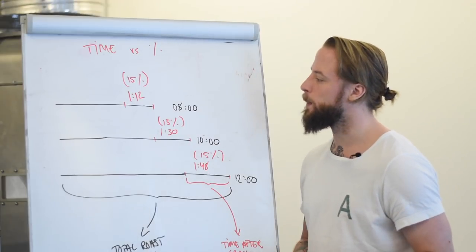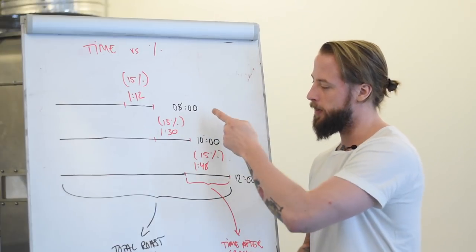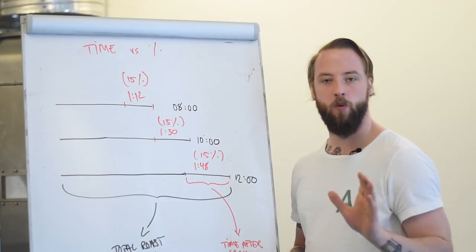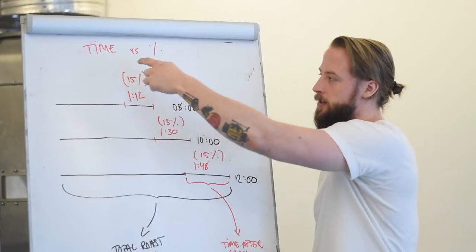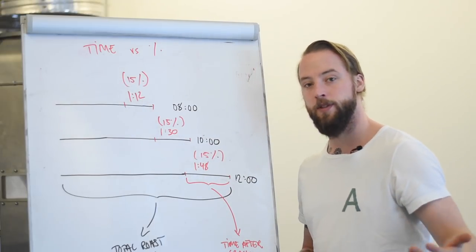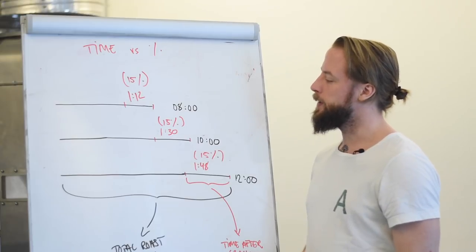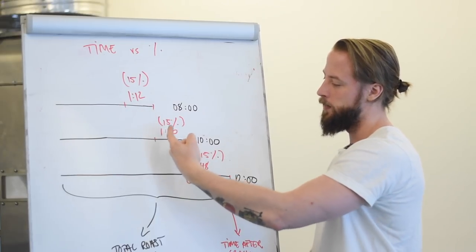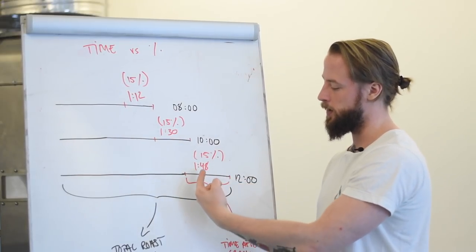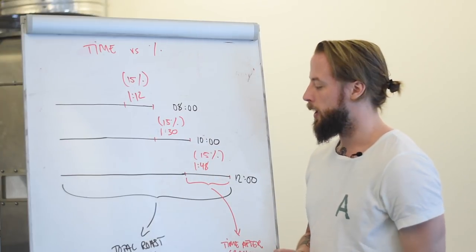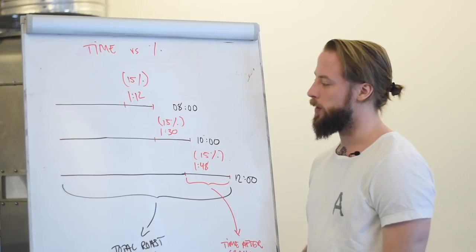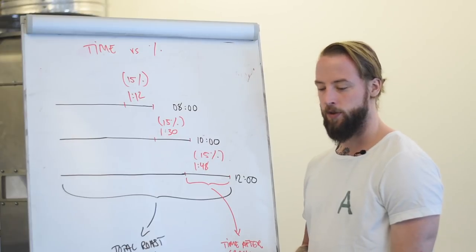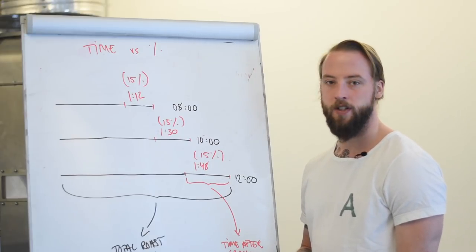We basically have three different roasts here: an eight-minute, ten-minute, and twelve-minute. Just random numbers here. We've taken 15% as your time after crack or development time if that's what you want to call it. I've clearly shown you what 15% of eight minutes would be, 15% of ten minutes would be, and 15% of twelve minutes would be. We don't really have to discuss this more than that. It's very clear that if you're roasting different roast times and you're letting percentages guide you, then you're going to have different times after first crack.